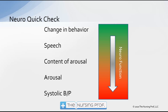Here again is our neuro quick check. First, look for a change in behavior — one of the earliest signs. We need to be in tune with that, rather than dismissing it as the patient having a bad day. Look further to rule out a neurological or metabolic problem like high blood glucose. Then assess speech, then content of arousal, then arousal itself, and finally systolic blood pressure. Use this five-point quick neuro check to find neurological problems early, before they become a big problem for your patient.